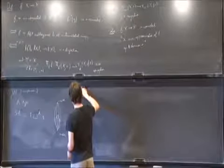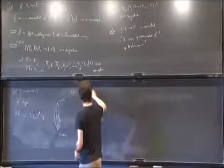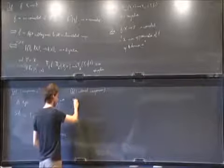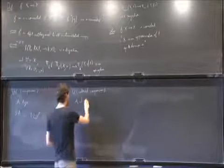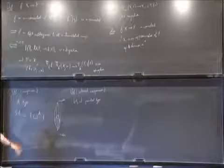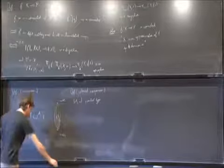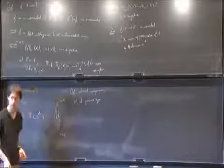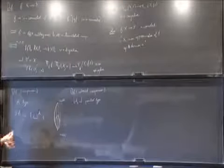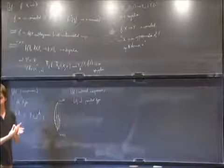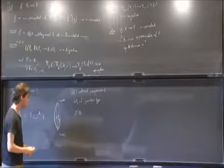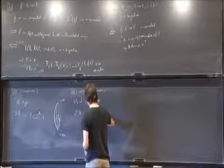There is a different but equivalent definition called the reduced suspension. If you take a pointed type, the reduced suspension is defined as follows. Usually in topology it is obtained by taking the suspension, assuming A is pointed, and contracting the canonical path from north to south down to a single point. Here, we can do it propositionally. So the reduced suspension of A will be the following higher inductive type.